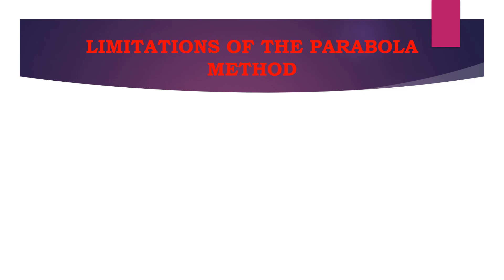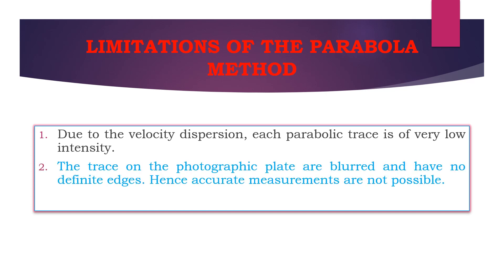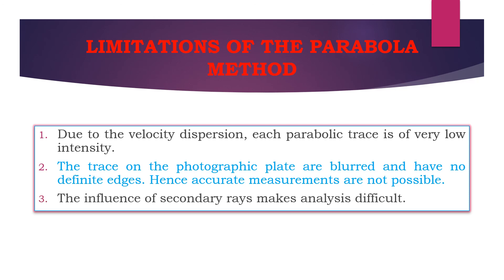There are some limitations of the parabola method. Due to velocity dispersion, each parabolic trace is of very low intensity, and the traces on the photographic plate are blurred with no definite edges, making accurate measurements not possible. Additionally, the influence of secondary rays makes analysis very difficult.